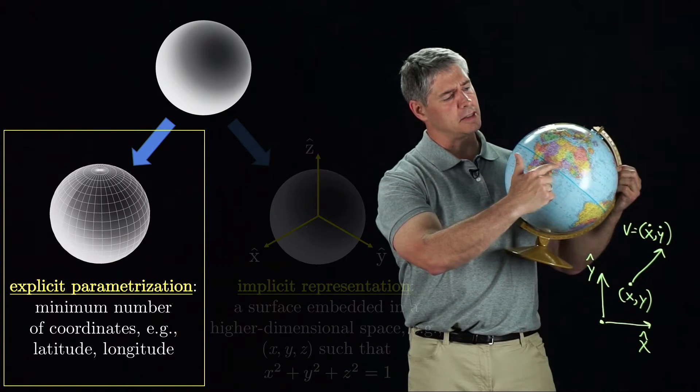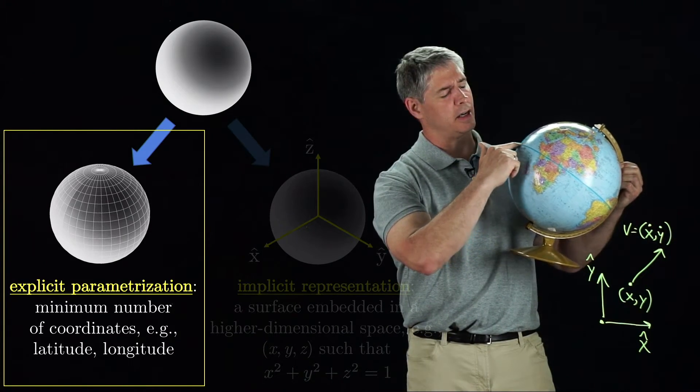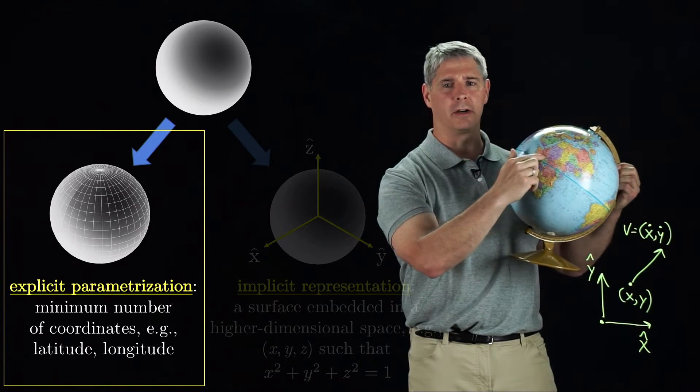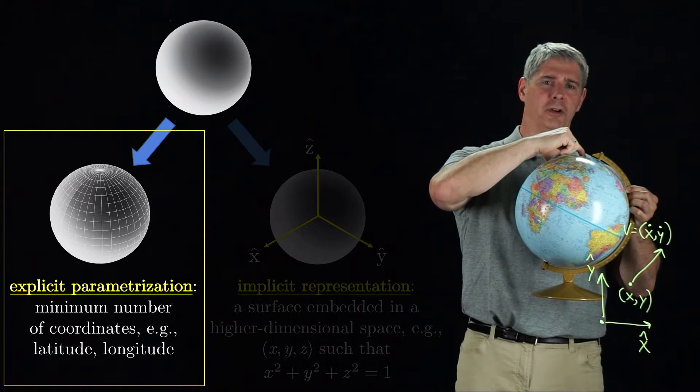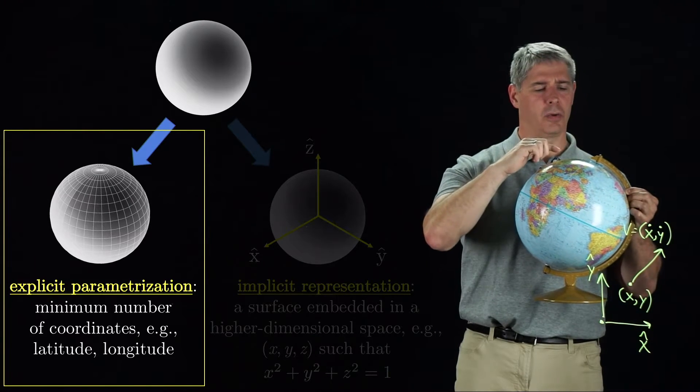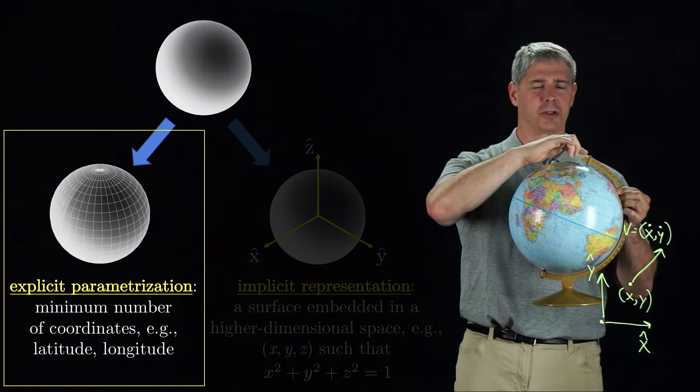For example, if you walk at constant speed along a constant latitude near the equator, your longitude changes slowly. If you do it near the North Pole, however, your longitude changes very quickly, with no upper bound as you get closer to the North Pole.